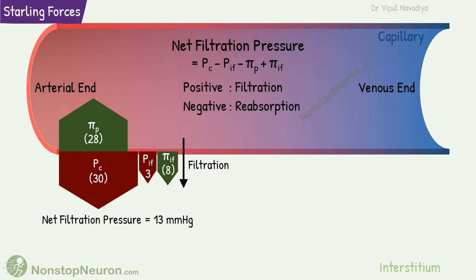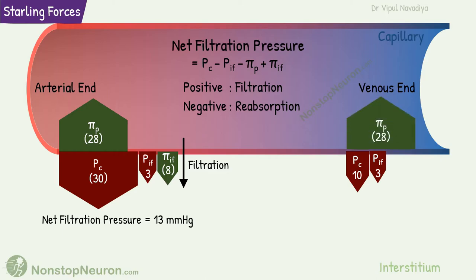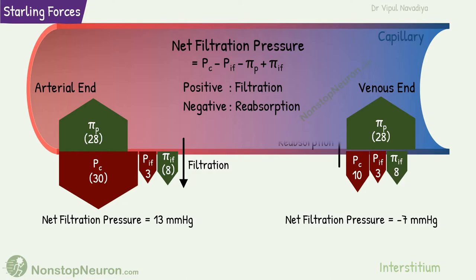At the venous end, capillary hydrostatic pressure drops to 10 mmHg, whereas the others are largely unchanged: interstitial hydrostatic pressure is –3 mmHg, capillary colloid osmotic pressure is 28 mmHg, and interstitial colloid osmotic pressure is 8 mmHg. So, the net filtration pressure is –7 mmHg, and it favors reabsorption of fluid.